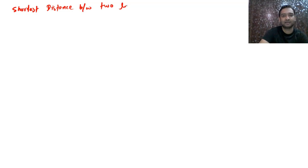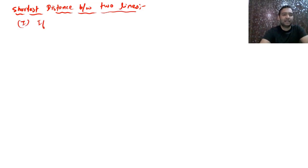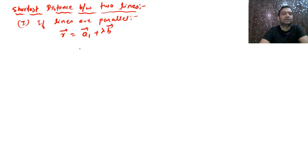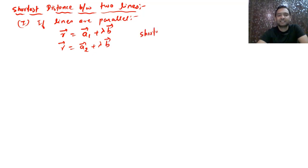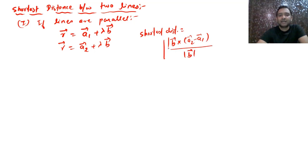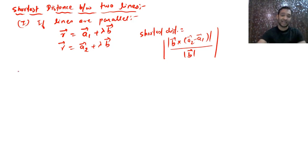Next is shortest distance between two lines. First case: if the lines are parallel. Two parallel lines are given as **r** = **a₁** + λ**b** and **r** = **a₂** + λ**b**. The shortest distance formula is: SD = |**b** × (**a₂** − **a₁**)| / |**b**|.